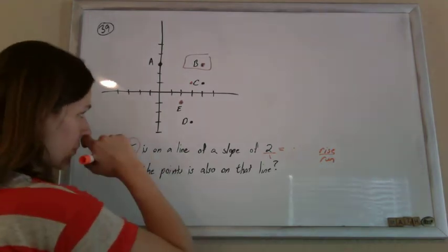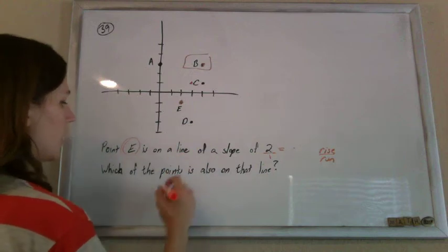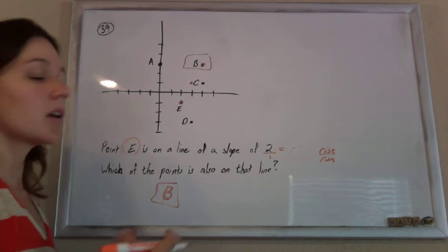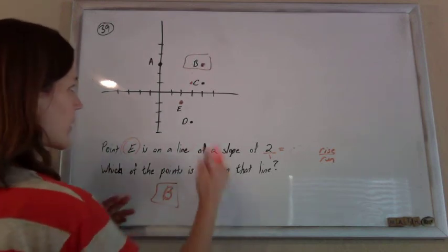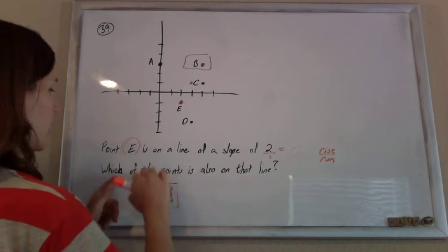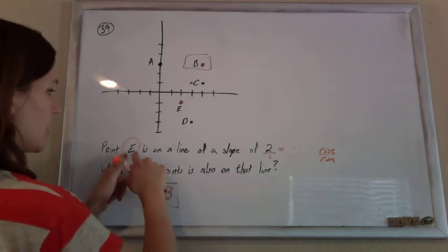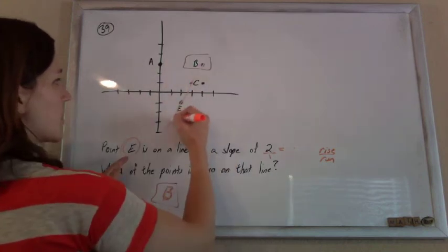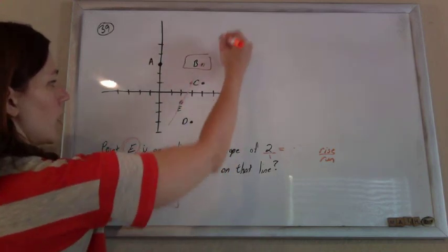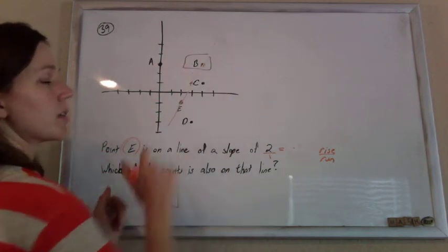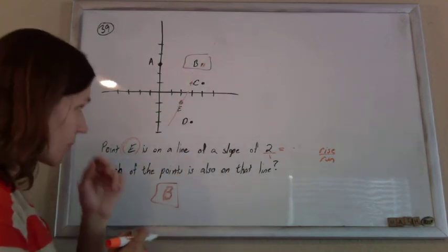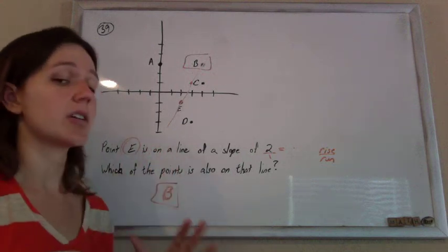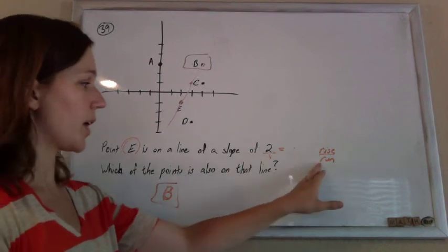So B lies on—so your answer is B. You're done. But I'm going to keep talking about it because slope's kind of interesting. That point B is on a line and point E is on a line with a slope of 2. The biggest idea you need to know for this test is that slope is rise over run.